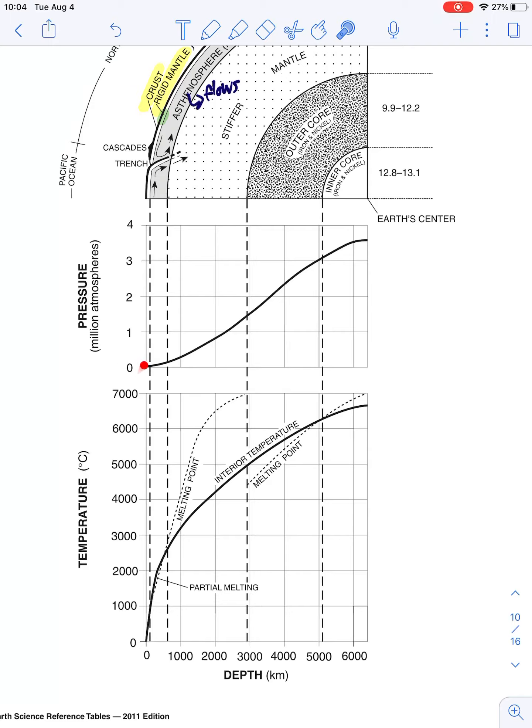Same thing with pressure. We start at zero millions of atmospheres, and we get all the way up to about 3.5 million atmospheres deep down around 6,300 kilometers. So let's just say I said, what was the pressure in the middle of the outer core? Well, the middle of the outer core is right here. So I go down until I hit my pressure line. I go across. It's about 2.5 million atmospheres.